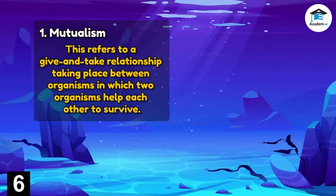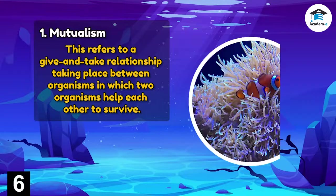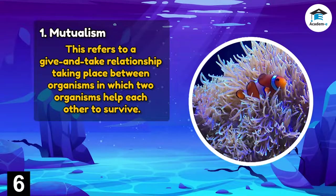Mutualism refers to a give-and-take relationship between organisms in which two organisms help each other to survive. An example is the interaction between a clownfish and a sea anemone. The clownfish lives among and is unaffected by the stinging tentacles of the sea anemone, and receives protection in return.